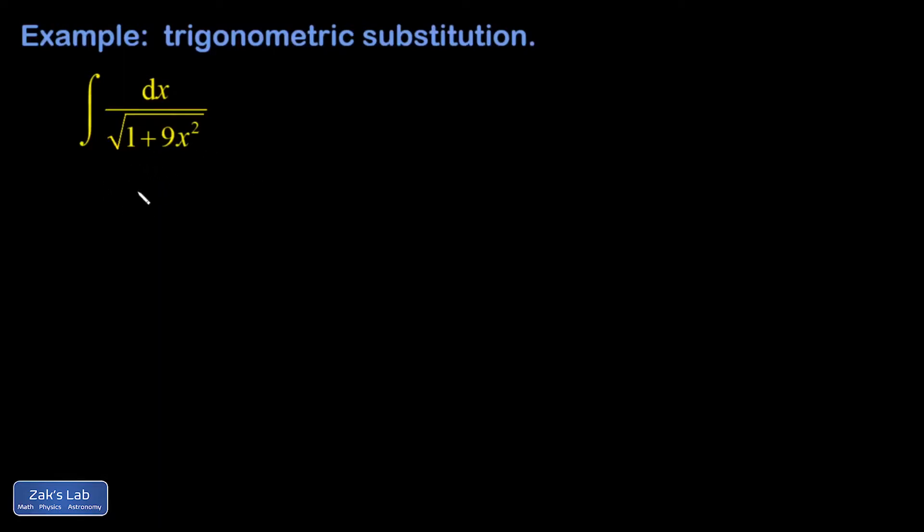This trig substitution integral is a pretty close match for the formula 1 plus tangent squared theta equals secant squared theta. So as a constant plus a variable thing squared, I also need to worry about how do I get rid of this 9.